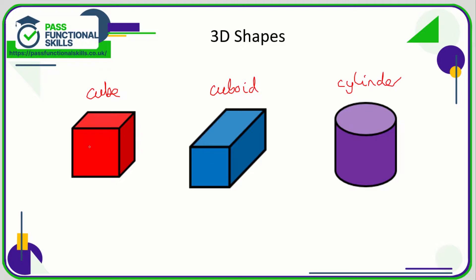A cube has six faces and all of these faces are square — front and back, right-hand side, left-hand side, top and bottom. A cuboid also has six faces: front and back, right-hand side, left-hand side, top and bottom, but some of these faces will be rectangular.